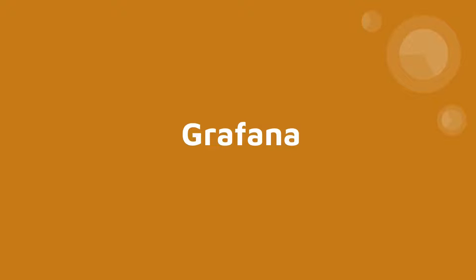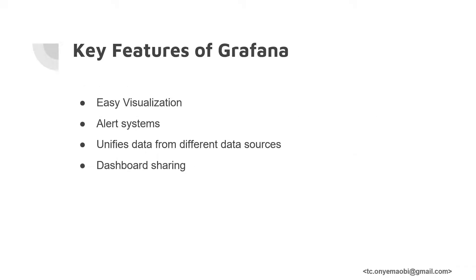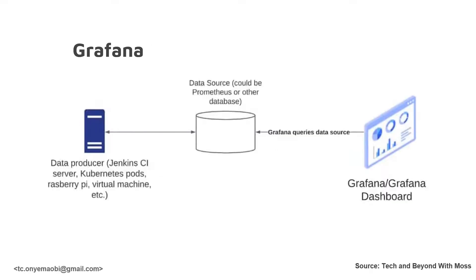Moving on, let's talk about Grafana. Grafana also works with Prometheus: while Prometheus collects and stores the query data, Grafana visualizes it. Grafana as a third-party app has the capability to include Prometheus as a data source, as well as other data sources. You can have a wide variety of visualizations including graphs, charts, histograms, and tables — we will see that as we progress. While Prometheus aggregates all metrics collected at timestamps into a single graph, Grafana allows you to present the metrics as you wish. Key features of Grafana include easy visualization, a large ecosystem, unified data from different data sources, and the ability to share dashboards of a particular application with your team.